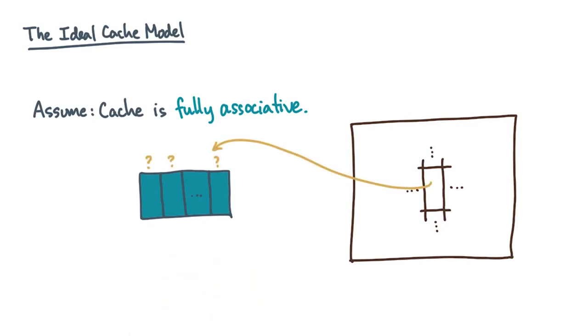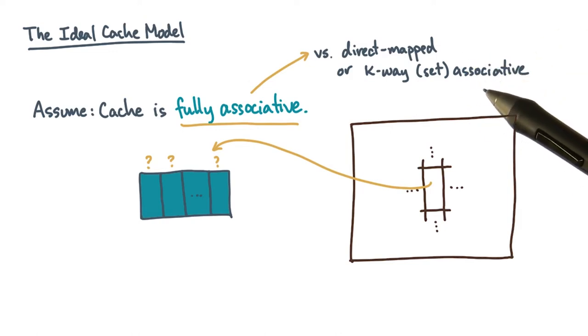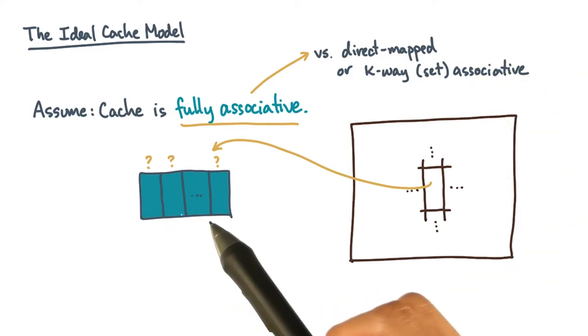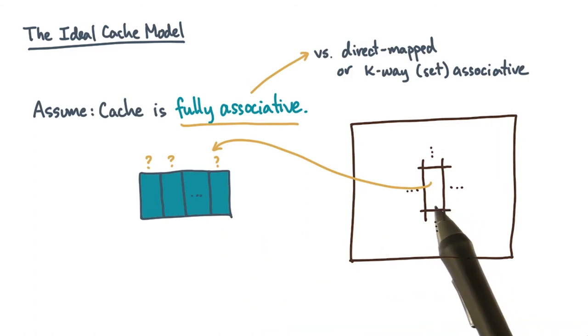Now, you may know about set associative caches and direct mapped caches. If you do, then you know that real caches typically don't implement full associativity. Rather, they implement one of these schemes, which has the effect of restricting the possible cache lines that a given memory address can go into. Full associativity says you can ignore this restriction. It's a simplifying assumption that will make our ideal cache model more powerful than real caches.